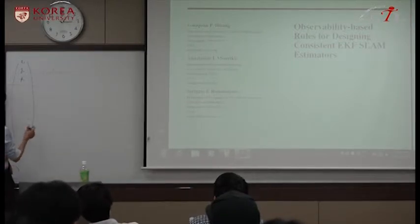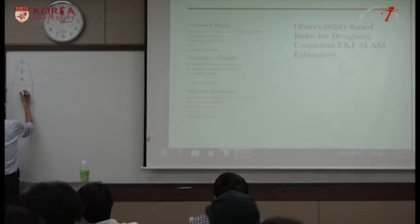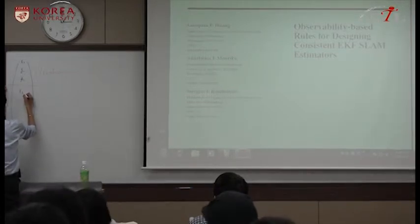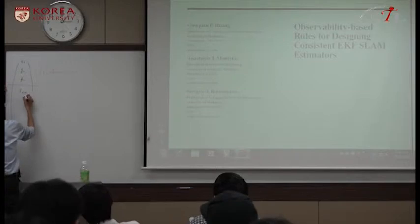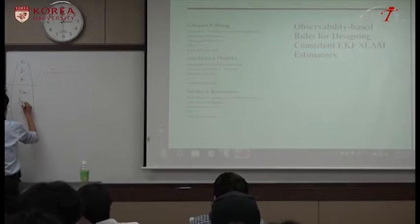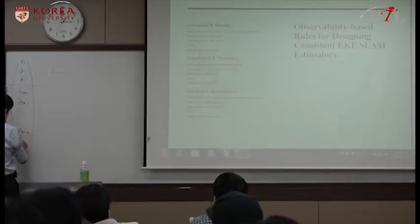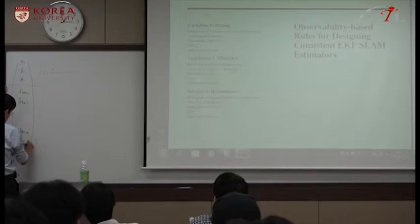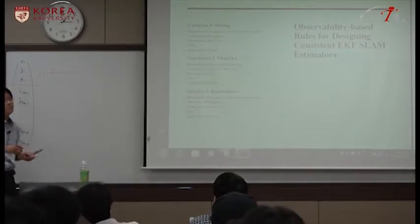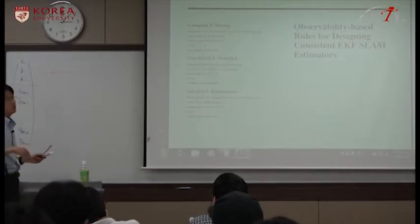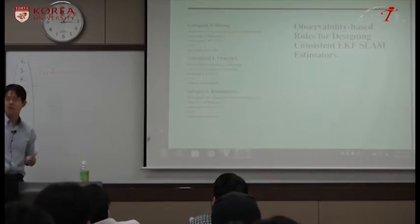And there is a landmark. First landmark x, y location, and there is a second landmark. There could be many landmarks, let's say m landmarks. Landmark is something, for example, if you want to do localization in this room, then if you use a robotics vacuum cleaner,